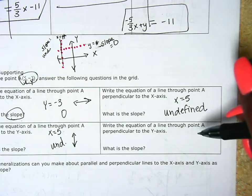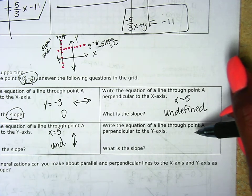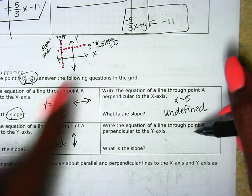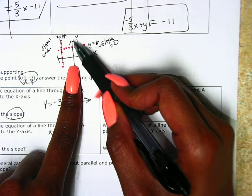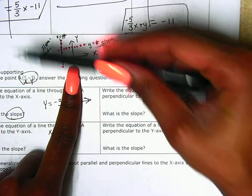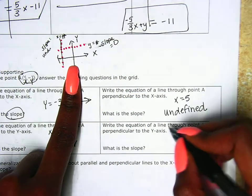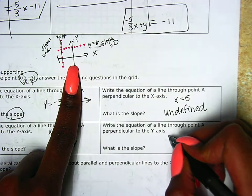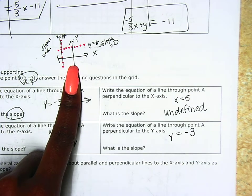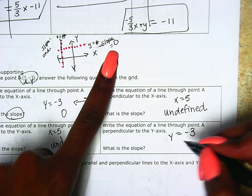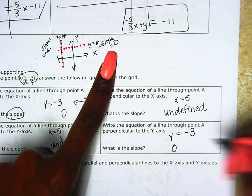Write the equation of a line through point A that is perpendicular to the y axis. So this line here is perpendicular to the y axis — here's the y axis, that line's cutting through it. So that has an equation of y equals negative 3. And our slope for that line is 0.